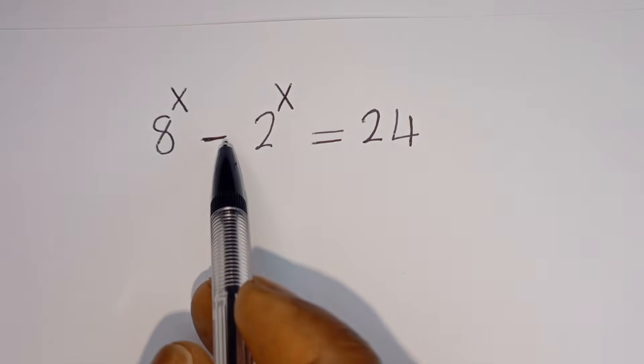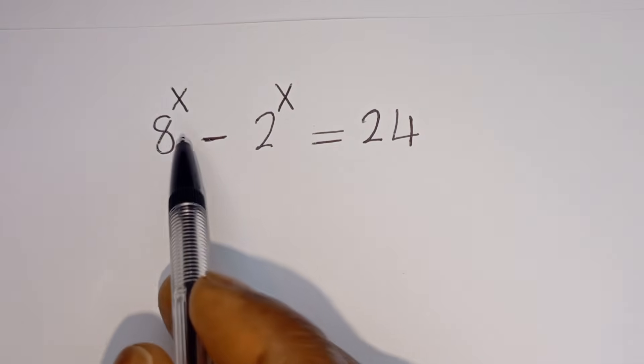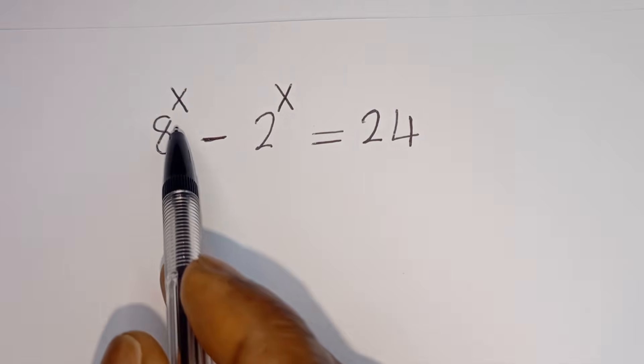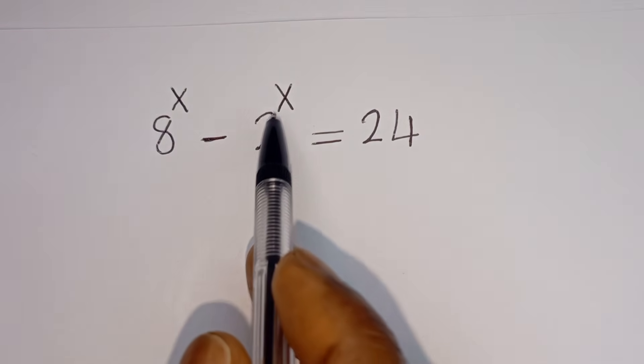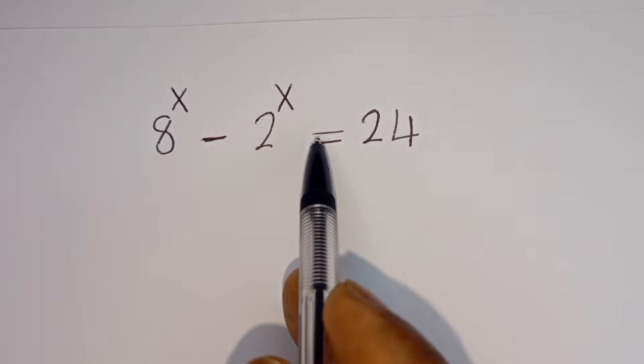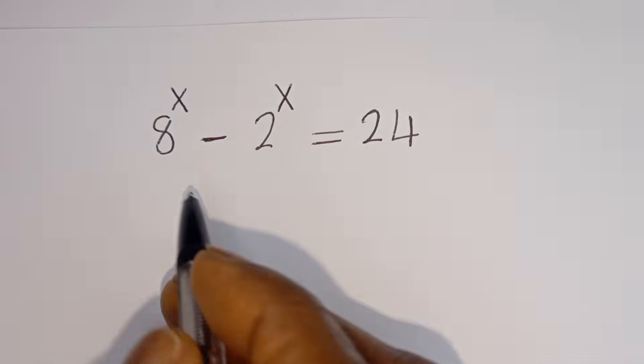Hello. How to solve for x in this equation: 8 to the power of x minus 2 to the power of x is equal to 24.